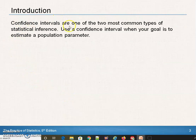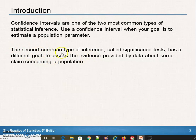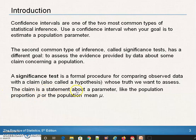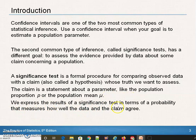Confidence intervals are what we did last chapter — one of the two most important and common types of statistical inference. If your goal is to estimate a population parameter, then you use a confidence interval. The second most common type is called significance tests, to assess the evidence provided by data about some claim concerning a population. A significance test is a formal procedure comparing observed data with a claim, also called the hypothesis, whose truth we want to assess. The claim is a statement about a parameter like the population proportion or the population mean. We express the results of a significance test in terms of a probability that measures how well the data and claim agree.